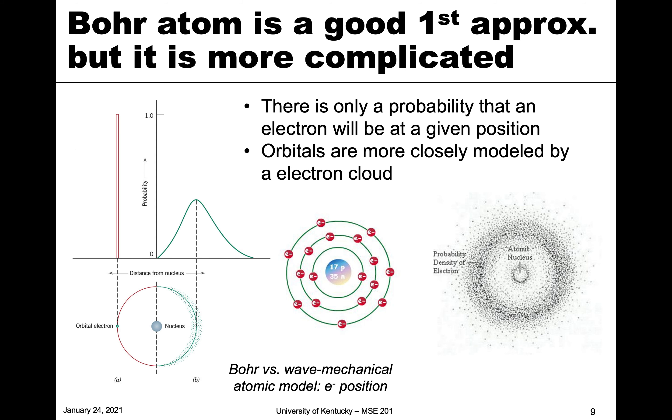The Bohr atom gives us a good first approximation of what's happening. We have these very discrete energy levels—here's an electron at a very specific place from the nucleus. But in actuality, instead of a very discrete level, there's actually a range over which the electron will be found. It's most probable in that position where we have that circle, but you can also find it elsewhere, which is represented by these dots.